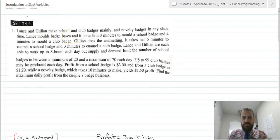So Lance and Julian are making badges. They're making school badges and club badges. And if they've got any spare time, they make novelty badges. So they make school badges, club badges, and spare time, novelty badges.